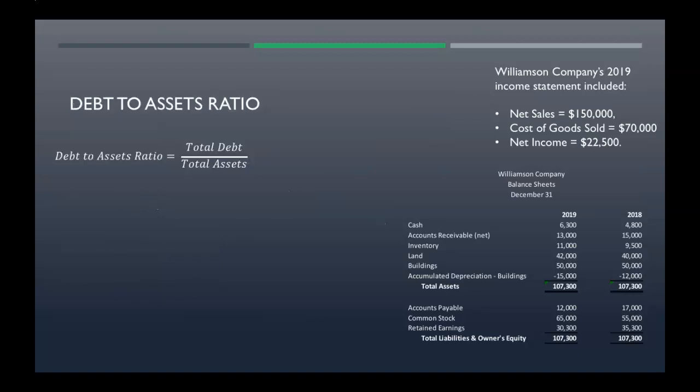Now the debt to assets ratio — this is your total debt divided by your total assets. Total debt is your total liabilities, which is just twelve thousand because we only have one liability. Dividing by total assets gives a debt to assets ratio of 11.18 percent.